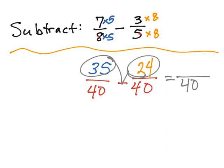35 minus 24, which gives me 11. 11 and 40 share no common factors. So that is my final answer.